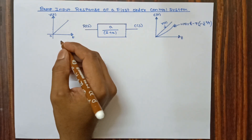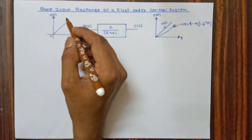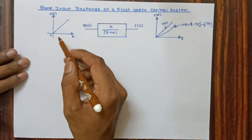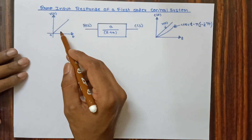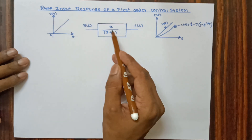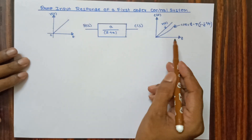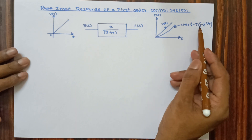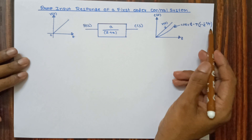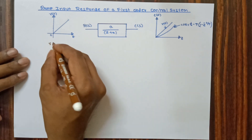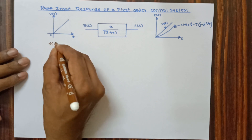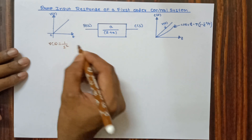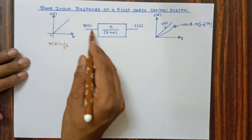Hello friends, welcome to Ace Tutorial. Today we are going to discuss ramp input response of a first order control system. This is the ramp input being applied to the first order system, and the response we are going to get has output equation c(t) = t - T(1 - e^(-t/T)). We know that ramp input in Laplace form R(s) = 1/s².